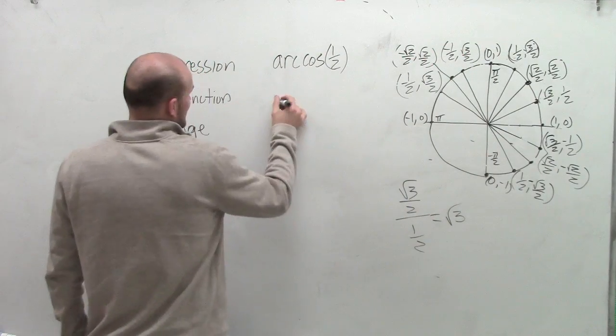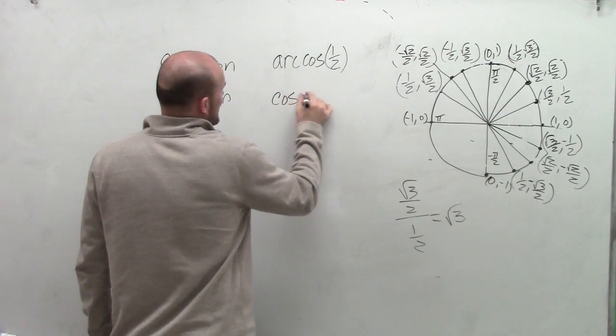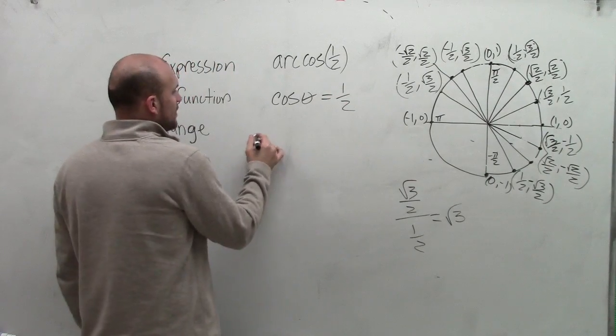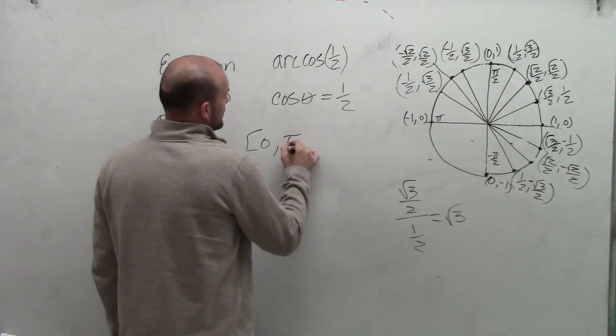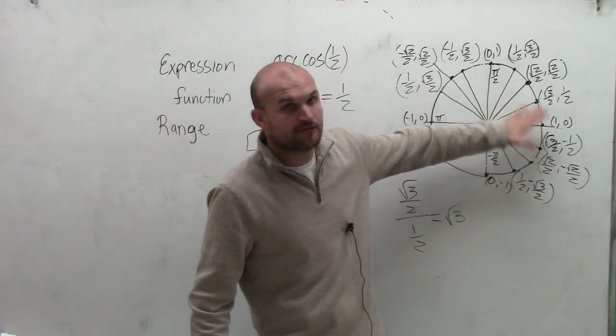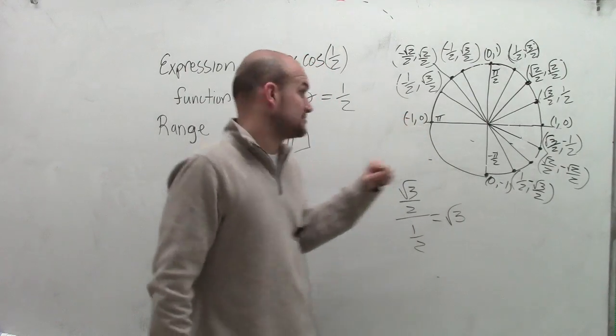So what I like to do is write it as a function saying cosine of theta equals 1 half. And that theta has to fall within the range of 0 and pi, meaning my angle has to fall between the first quadrant and second quadrant.